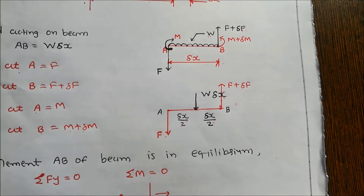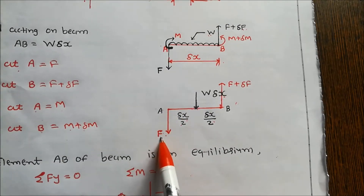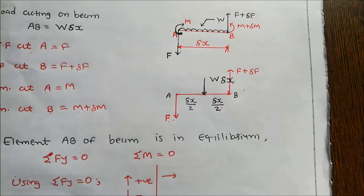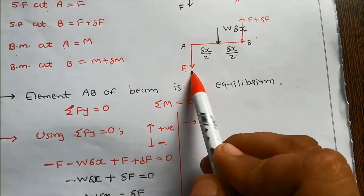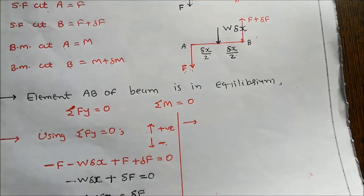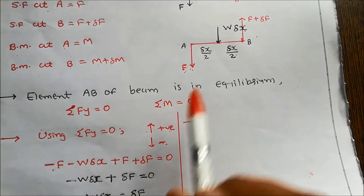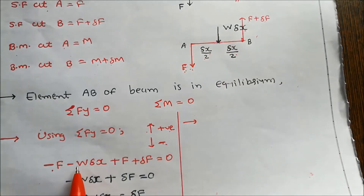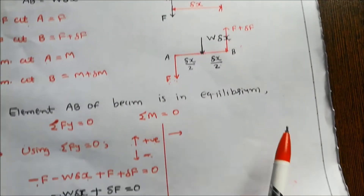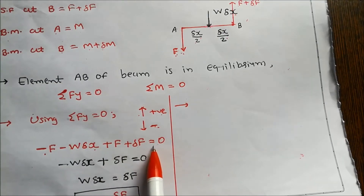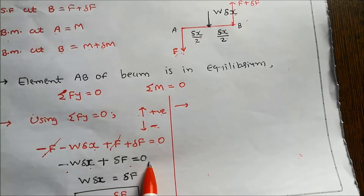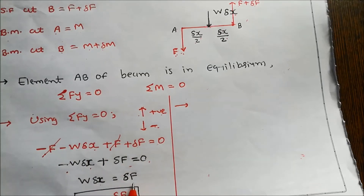We draw a simple force diagram: force at A is F, force at B is F plus delta F, and W into delta x acts at the middle. Force F acts downward, so by our sign convention it is negative: minus F. W into delta x also acts downward, so minus W into delta x. At point B, F plus delta F acts upward, so it is positive. Therefore: minus F minus W into delta x plus F plus delta F equals zero, and F cancels out.